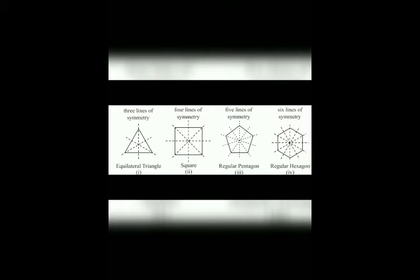Here are more examples of lines of symmetry in polygons. In an equilateral triangle we can draw one, two, and three lines of symmetry. In a square figure we can draw four lines of symmetry — one horizontal, one vertical, and two diagonals. In a regular pentagon we can draw five lines of symmetry. In a regular hexagon we draw six lines of symmetry.